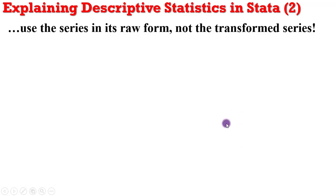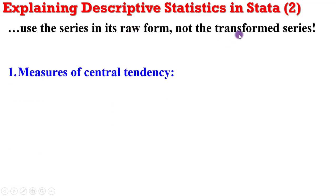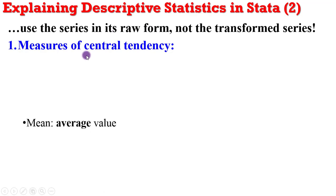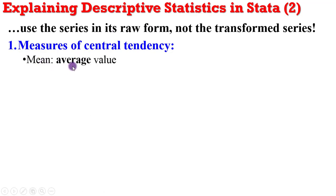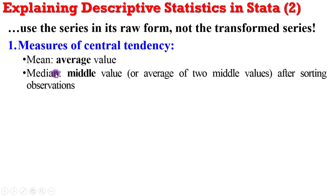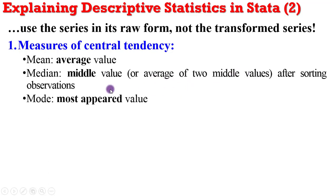Remember that it is important that if you want to do summary statistics, do it on the raw form of the series, not on the transformed series. The mean is simply the average value. The median is the middle value for that particular series after you have sorted from highest to lowest. If the total number of observations is an even number, just take the average of the two middle values to get the median. And the mode is the most frequently appeared value for that particular series among the observations.